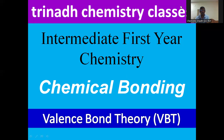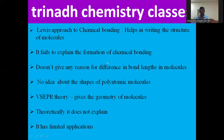Please like the video, share and subscribe the channel. To explain why atoms are participating in bonding and the shapes of molecules, the first and foremost theory was the Lewis approach to chemical bonding. This Lewis approach helps in writing the structure of molecules, but it fails to explain the formation of chemical bonding and why atoms are forming bonds.